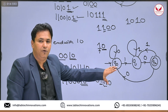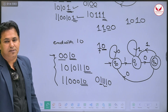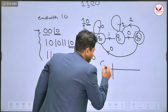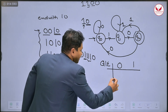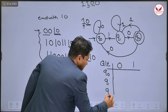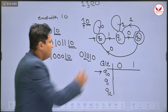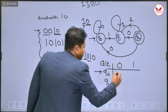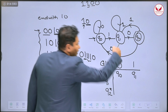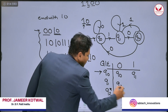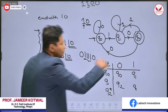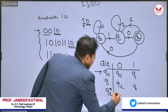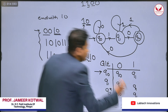So this is the final machine for the string ending with 1, 0. For the transition table: we have 3 states — q0 (initial state), q1, and q2 (final state) — with inputs 0 and 1. In q0, processing 0 stays in q0, processing 1 goes to q1. In q1, processing 0 goes to q2, processing 1 stays in q1. In q2, processing 0 goes to q0, and processing 1 goes to q1.